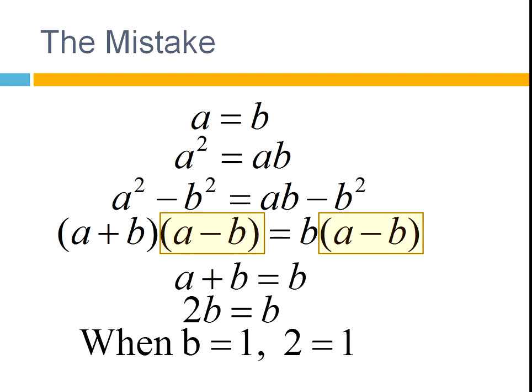So the mistake is in the cancellation of A minus B. These two things cannot be cancelled. When you look at it, it seems obvious, you just cancelled those off. But remember the first statement, A equals B. So A minus B is 0.